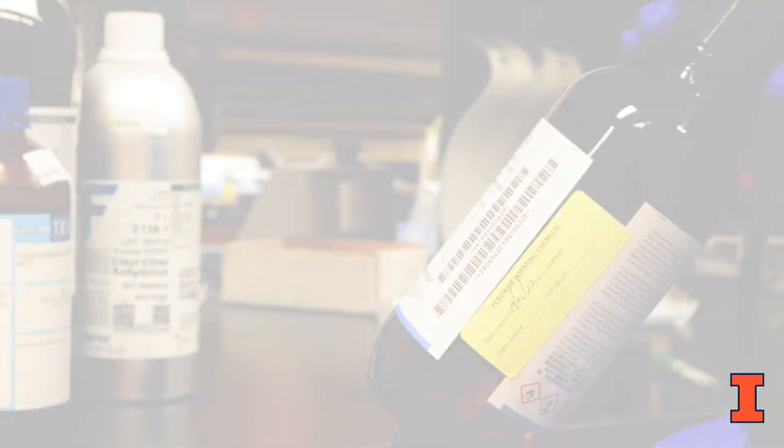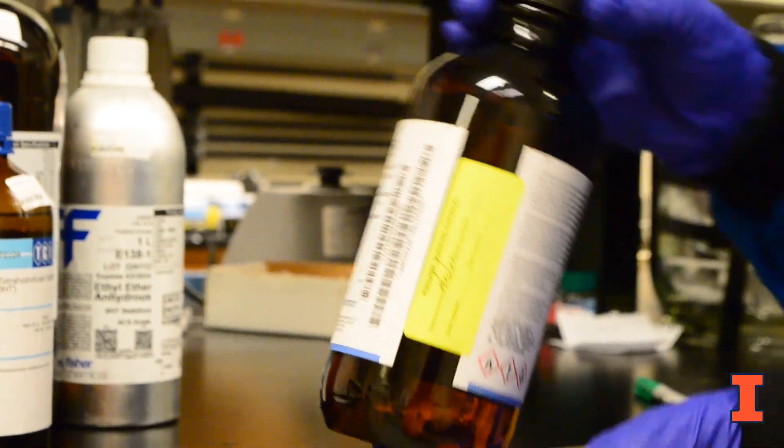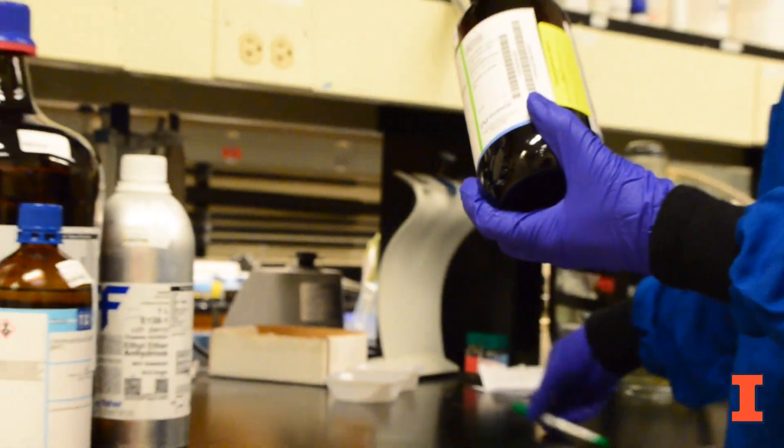There are many ways to manage the risks associated with peroxide formers. One way is to record the date received to keep track of the age of your chemical and the date opened to know when to test.